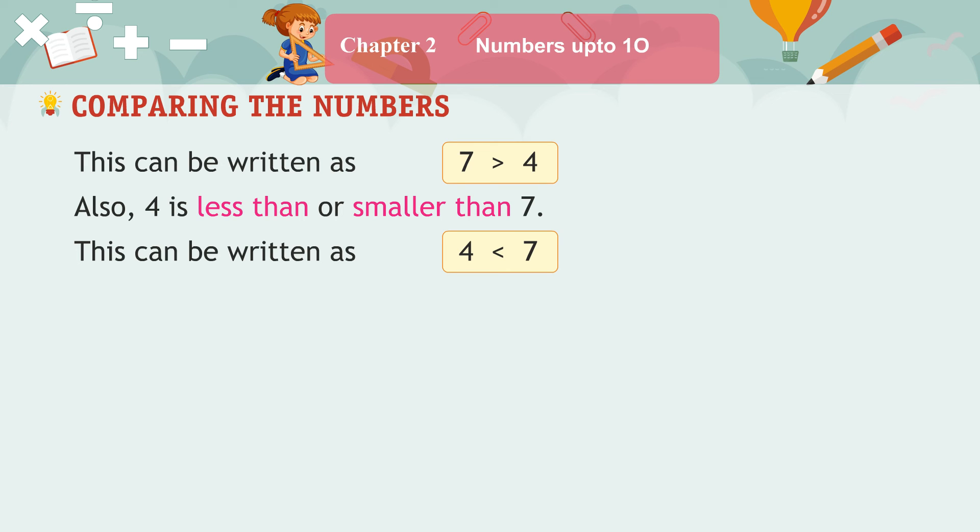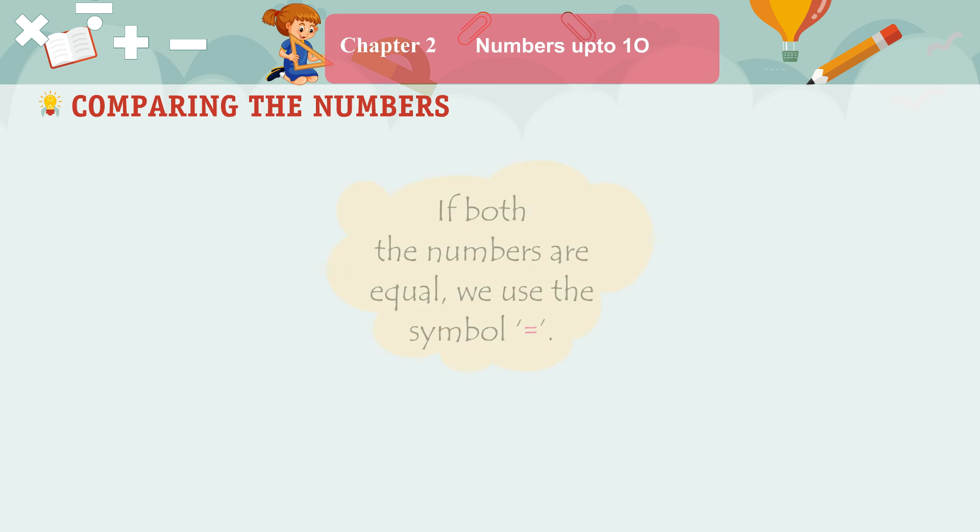Also, 4 is less than or smaller than 7. This can be written as 4 is less than 7. If both the numbers are equal, we use the symbol equals.